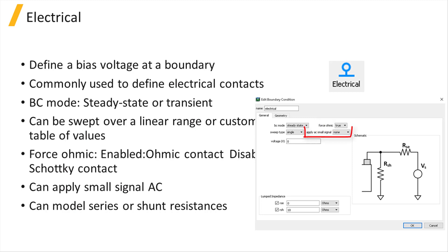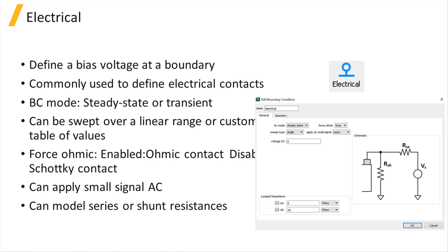There is also an option to apply an AC small signal to the electrical contact, which will be covered in the small signal AC simulation subsection of this course. Series and shunt resistances can also be defined for an electrical boundary condition to model non-idealities such as voltage drop or current leakage at the contacts resulting from these parasitic resistances. When a transient simulation is being performed, choosing the transient BC mode allows the user to define a table of voltage versus time, which can be used to define a time-varying voltage at the corresponding boundary. This will be covered in the transient simulation subsection of this course.